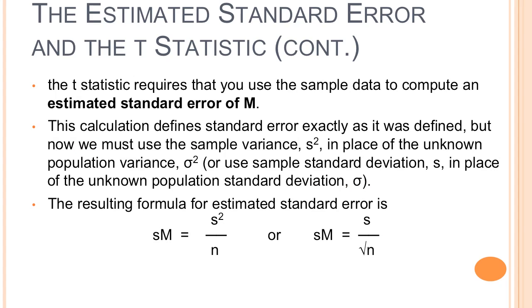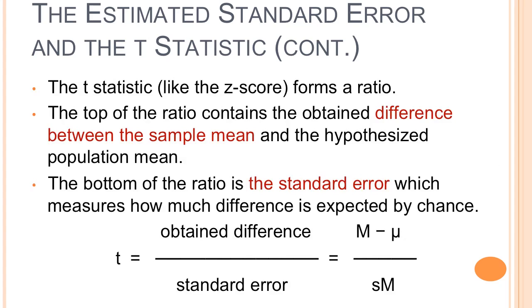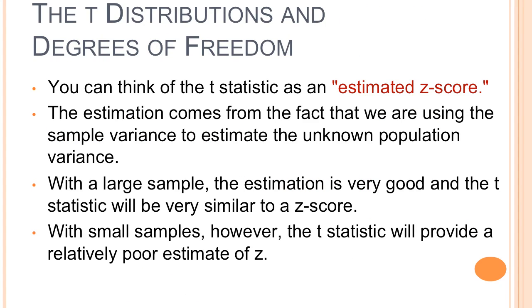You can think of the t-statistic as an estimated z-score. The estimation comes from the fact that we're using sample variance to estimate the unknown population variance. With a large sample, the estimation is very good and the t-statistic will be very similar to a z-score. With small samples, it's not very good — it's a poor estimate of z.